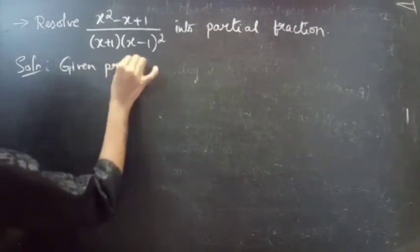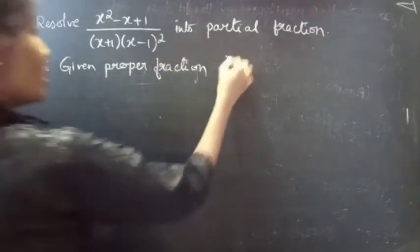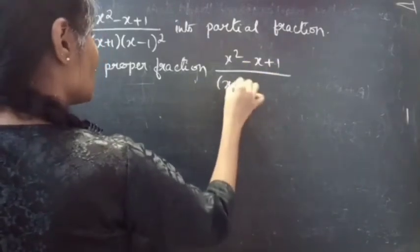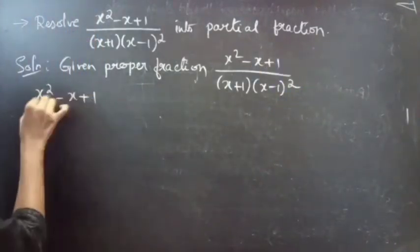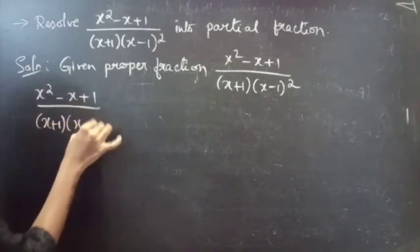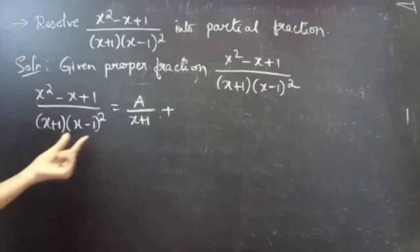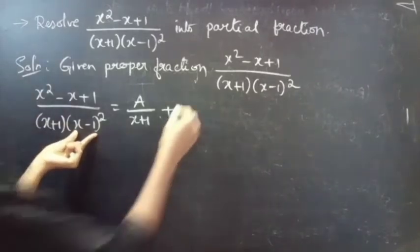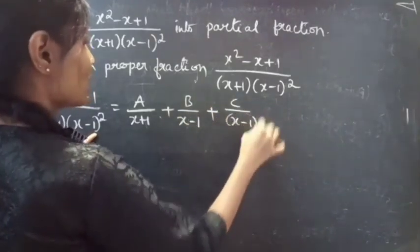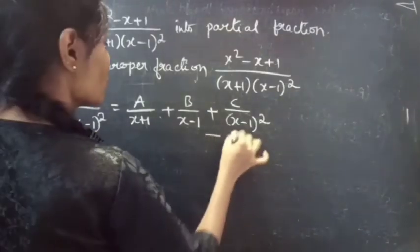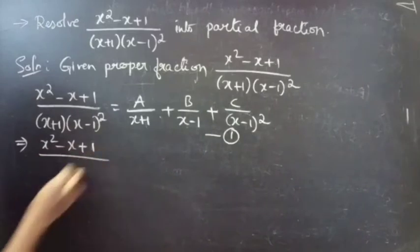Given proper fraction: x² - x + 1 by (x+1)(x-1)². We can write this fraction as A/(x+1) plus B/(x-1) plus C/(x-1)². Consider this as equation 1.